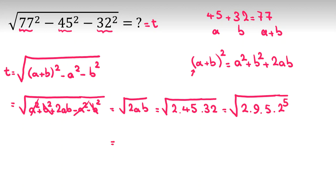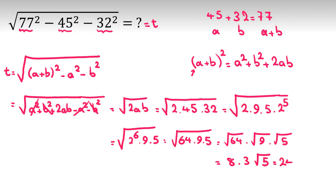So it will be 2 times 2 to the 5, which will be 2 to the 6 times 9 times 5. If you take outside, 2 to the 6 is 64, 64 times 9 times 5, and we can say it is equal to root 64 times root 9 times root 5. 64 is 8, root 9 is 3 times root 5, which will be 8 times 3, 24 root 5.